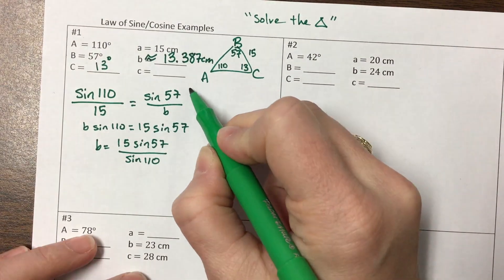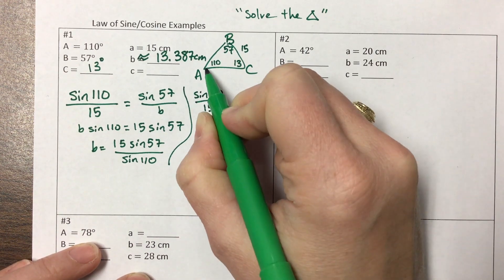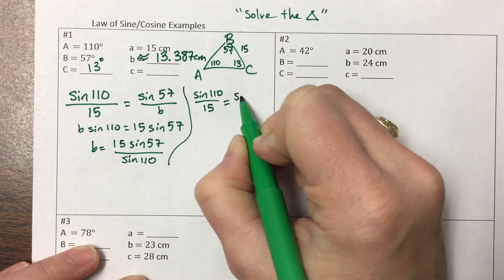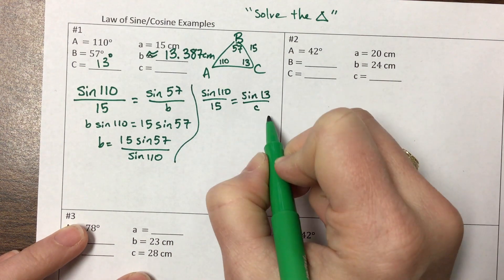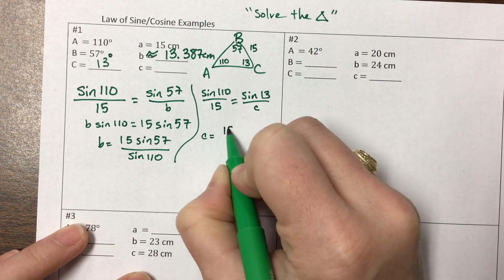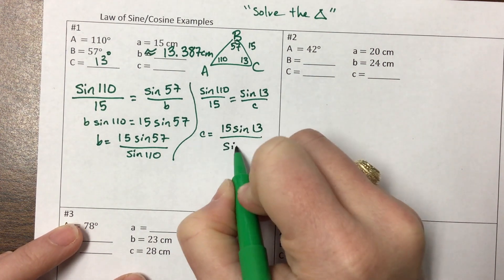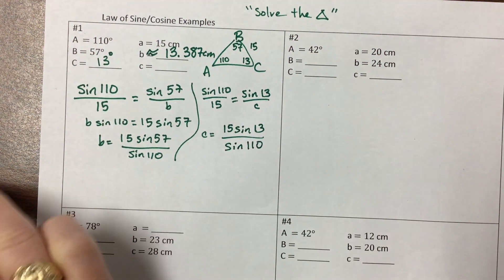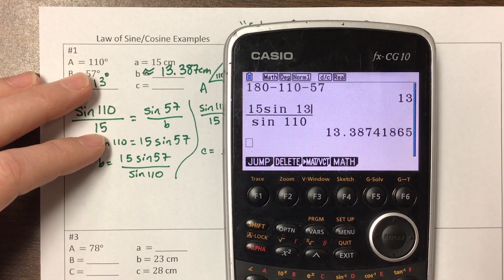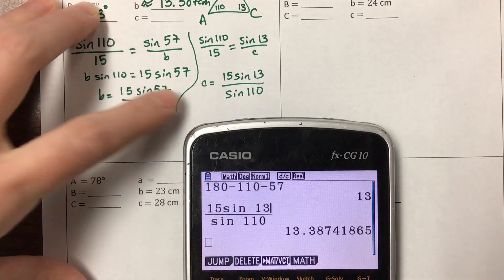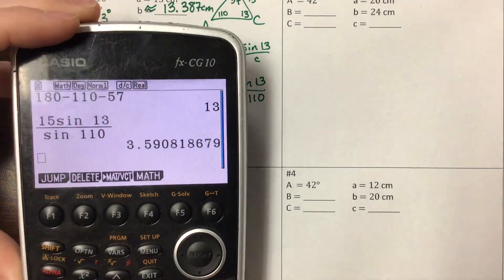So then I need to find the other part. And so I can set the same thing up, sine of 110 over 15 is equal to sine of C, sine of 13, all over little c. So then I end up getting 15 sine of 13 divided by sine of 110. All I need to do in my calculator is change this to 13. 15 sine 13 over sine of 110, and I get that other side is pretty little, it's 3.591.